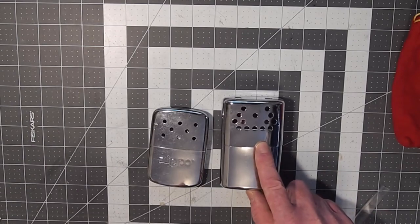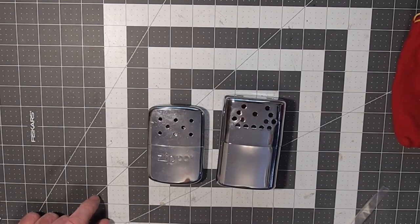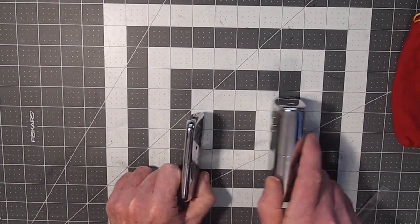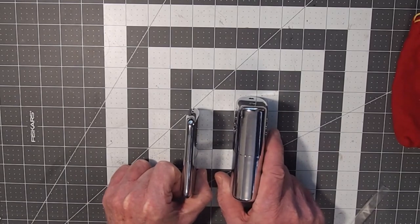This is a Johnny Giant hand warmer and I've placed a standard Zippo beside it so you can get an idea of the difference between a Giant and a regular Zippo.